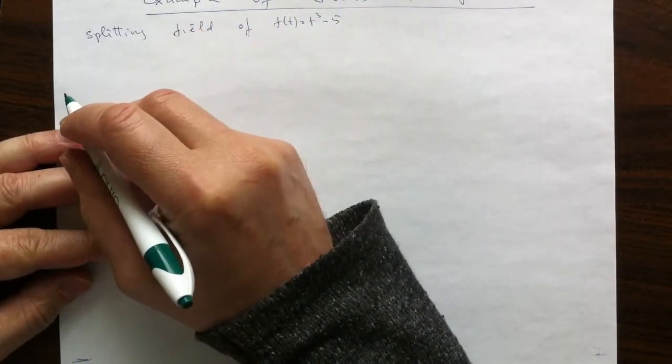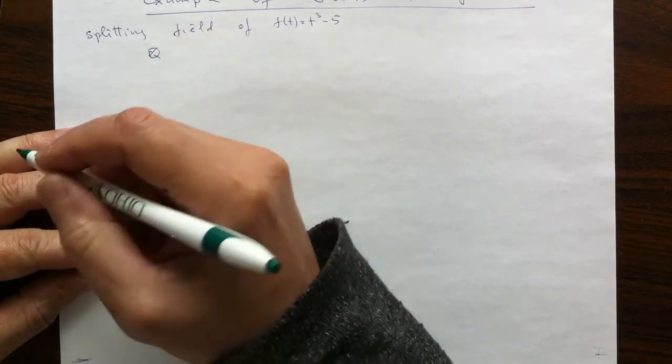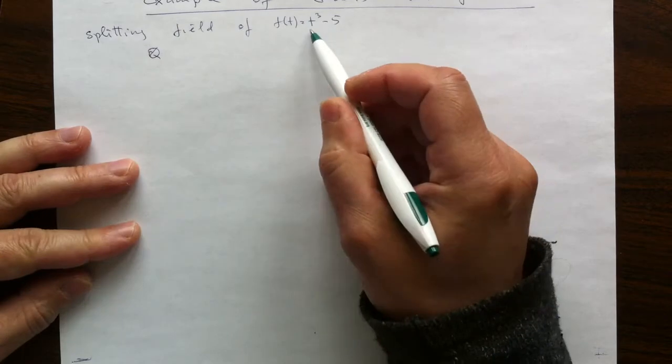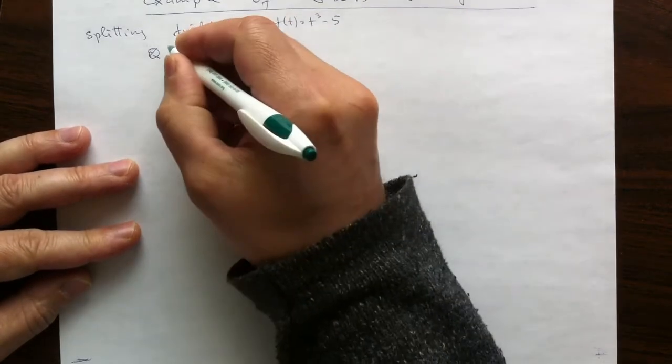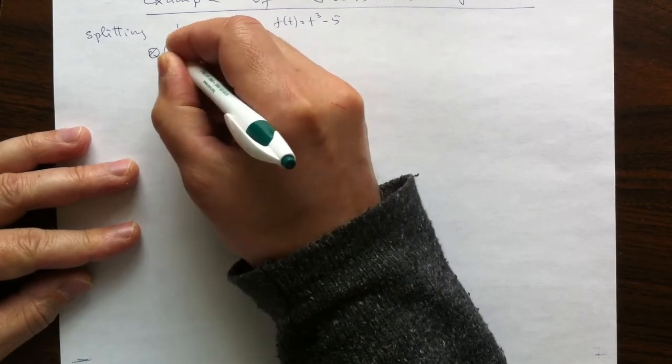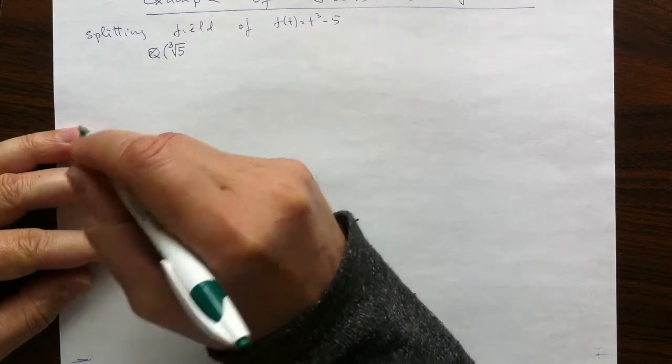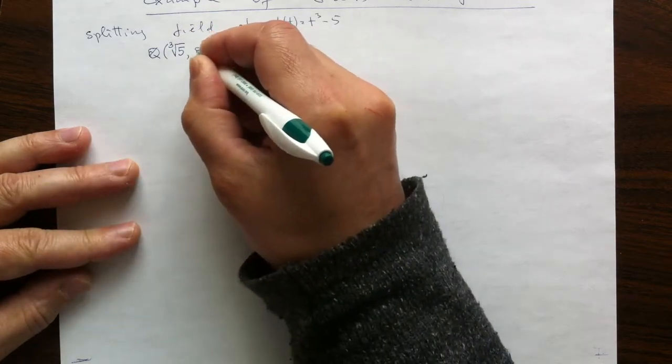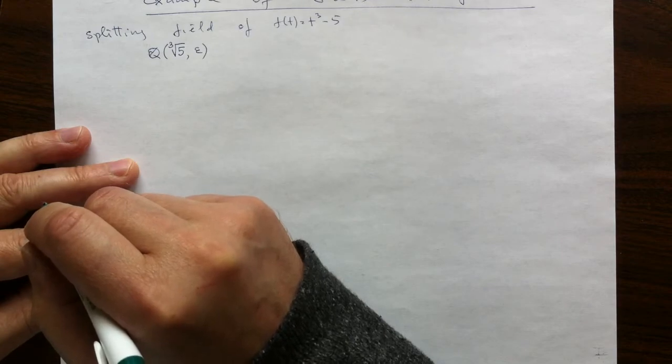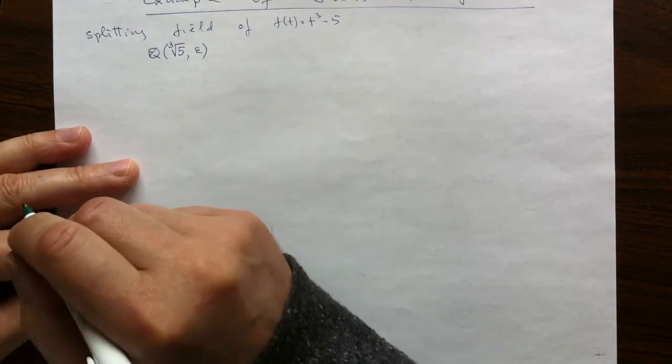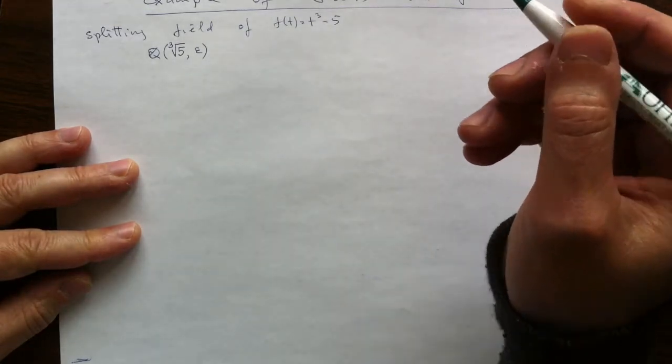The structure of this subfield, of the immediate one, is just take all three roots in complex numbers and attach them to the rationals. But we could also do the following. Instead we could take the real root of 5 over degree 3 and then we could take a complex root of 1 over degree 3 and attach them separately to rationals, together to rationals, and that will give us the same splitting field.